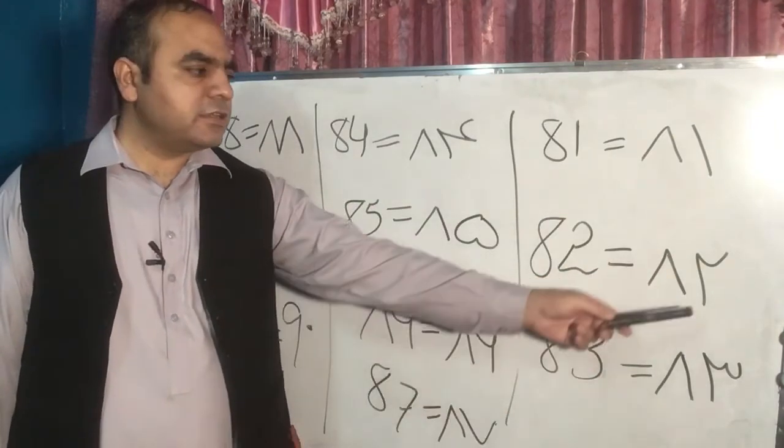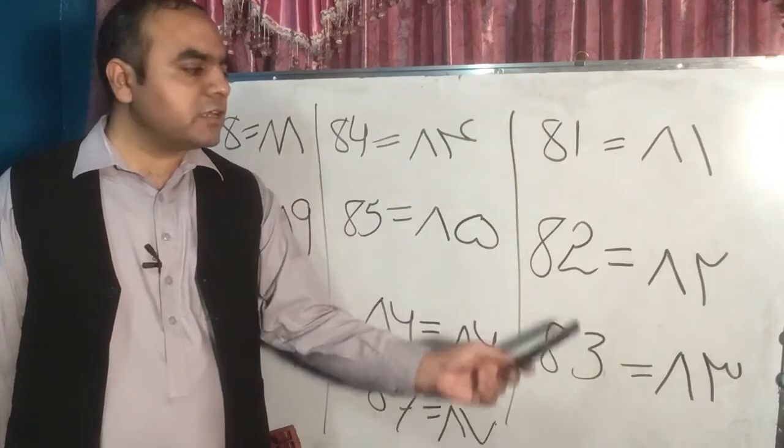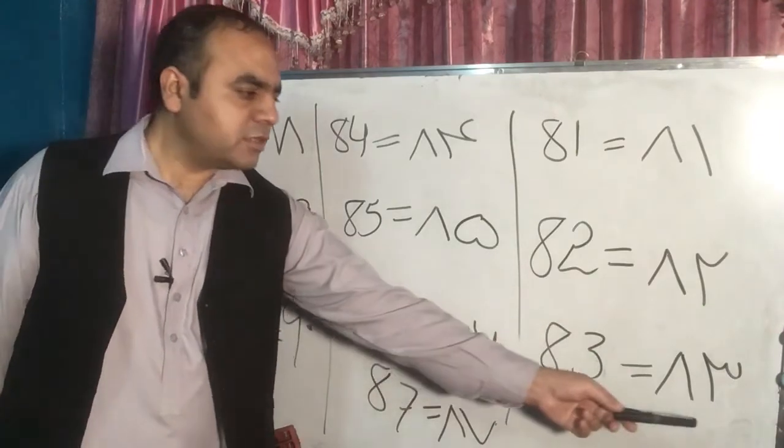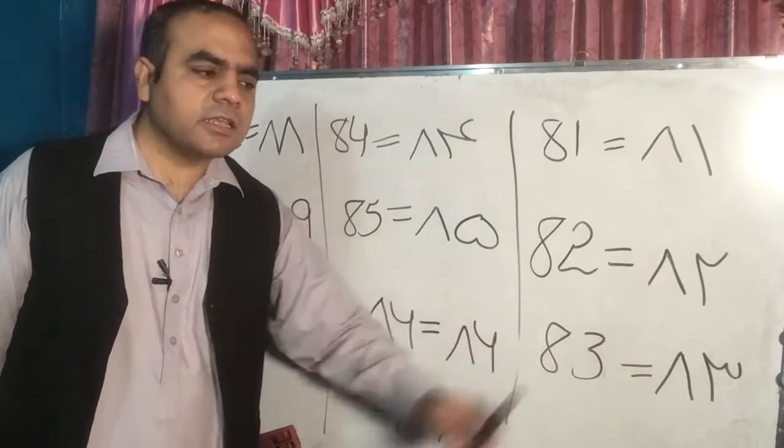Dwa atya. Dwa atya mean 82. Dree atya. Dree atya.